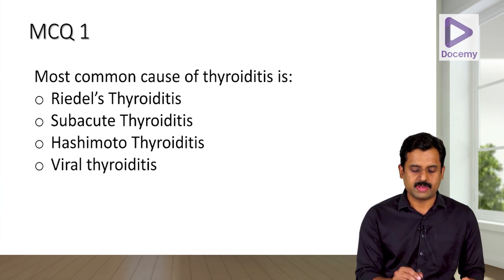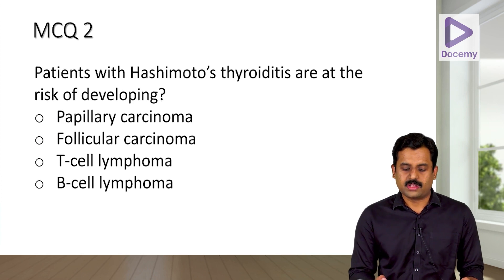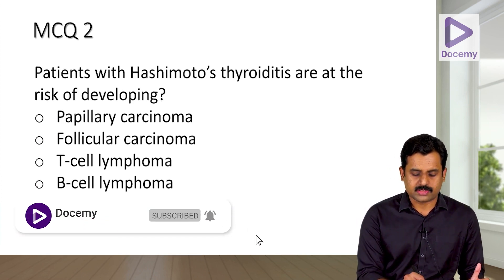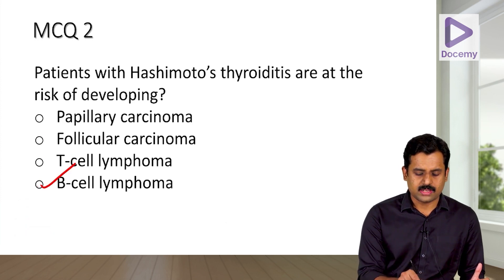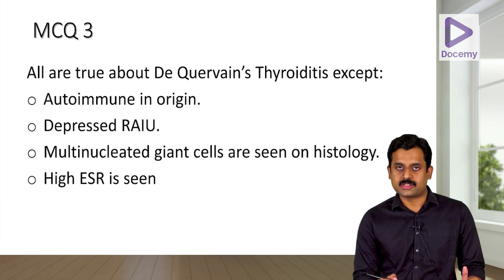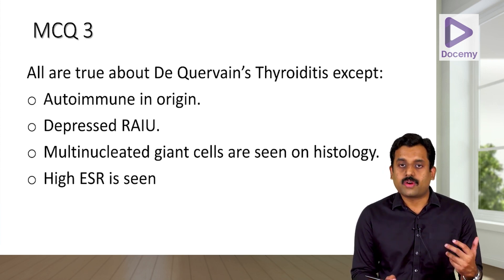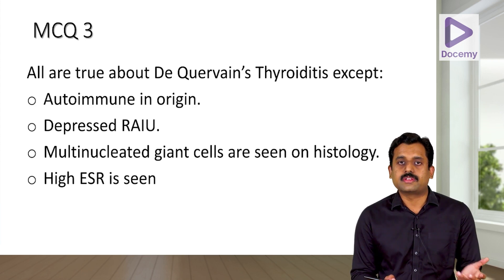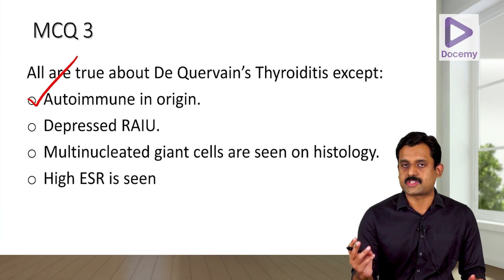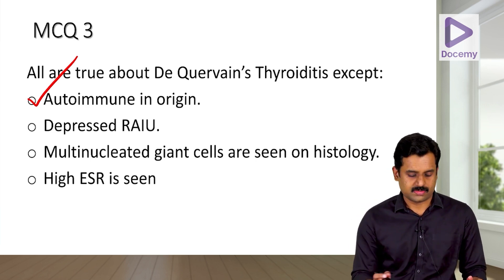MCQ review: the most common cause of thyroiditis is Hashimoto's thyroiditis. Patients with Hashimoto's thyroiditis are at risk of developing B-cell lymphomas. Regarding de Quervain's thyroiditis, it is not autoimmune — it is of viral etiology; the common suspected viruses are Coxsackie virus, mumps virus, and adenovirus.